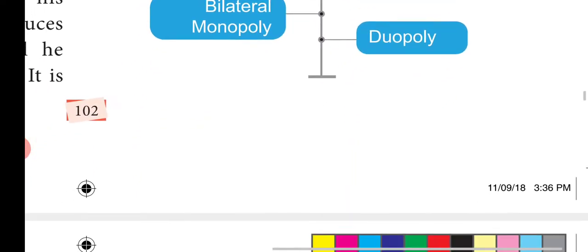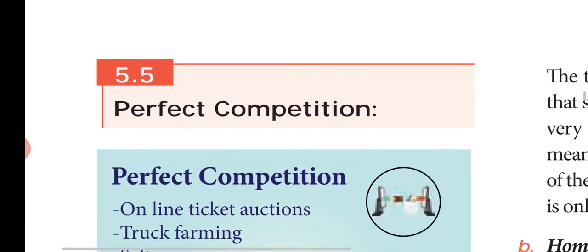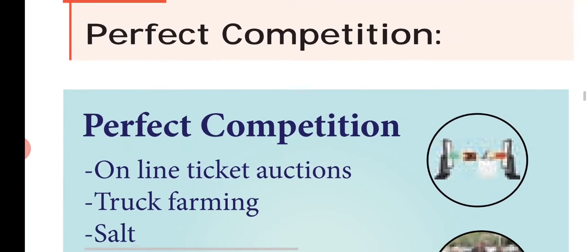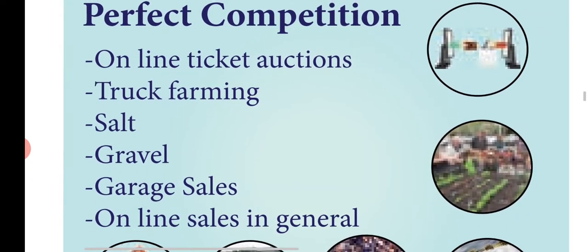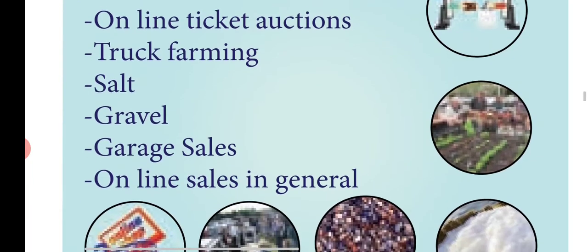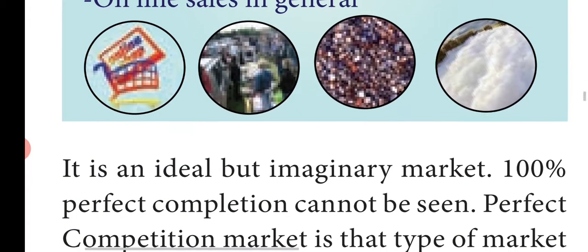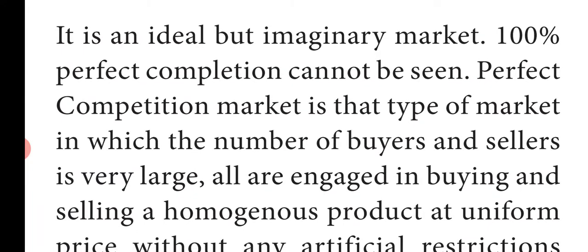The first one is perfect competition. Examples include online ticket auctions, truck farming, salt, gravel, garage sales, and online sales in general. Perfect competition is an ideal but imaginary market.